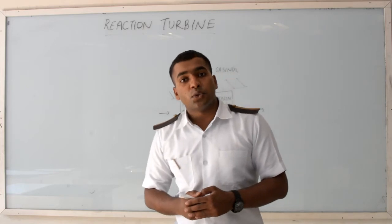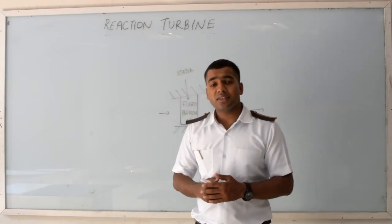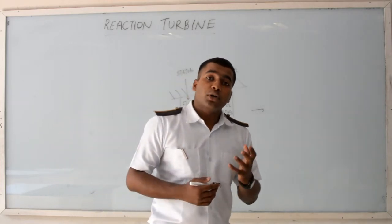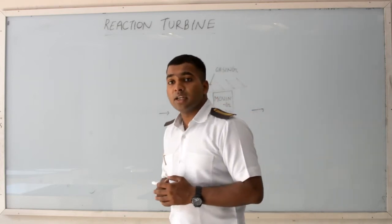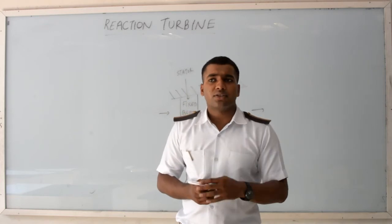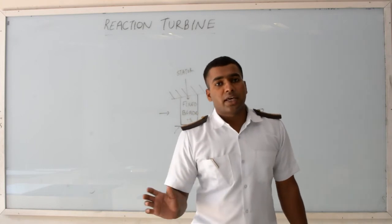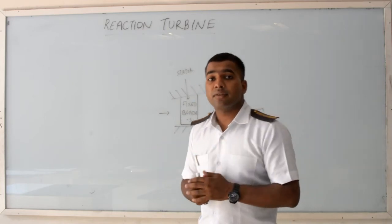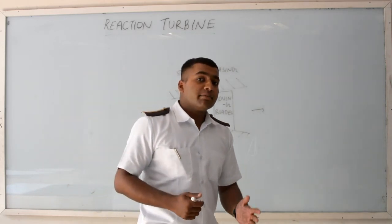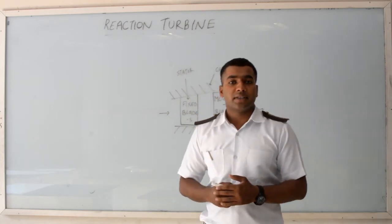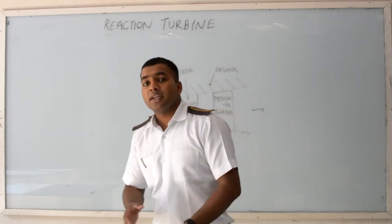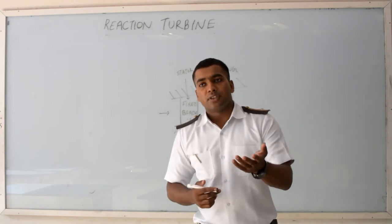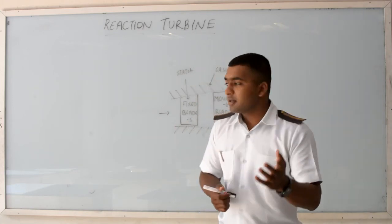I will now explain another parameter known as the degree of reaction. It is a mathematical parameter used to quantify how much enthalpy drop is taking place in the stationary blade and in the moving blade. Mathematically, it is the ratio of enthalpy drop in the moving blade divided by the total enthalpy drop in the stage. A 50% degree of reaction means there is an equal enthalpy drop taking place in the stationary blades as well as in the moving blades. A 0% degree of reaction means there is no enthalpy drop taking place in the moving blades — this is an example of an Impulse Turbine.